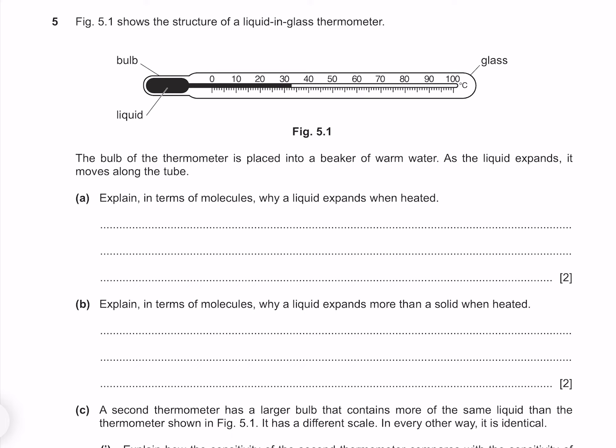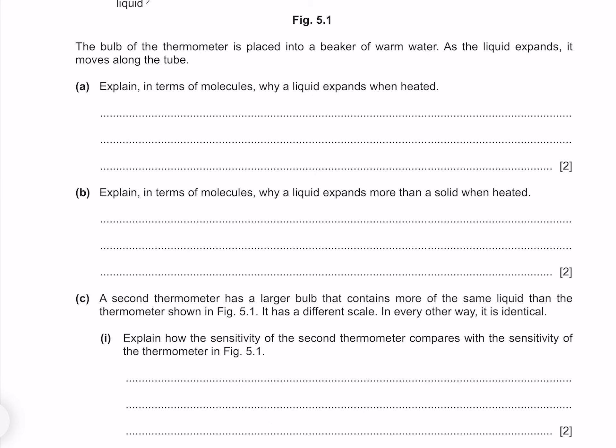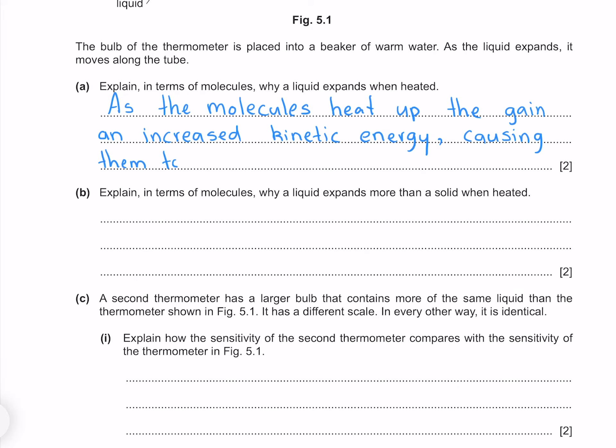Figure 5.1 shows the structure of a liquid-in-glass thermometer. The bulb is placed into a beaker of warm water and as the liquid expands it moves along the tube. Explain in terms of molecules why a liquid expands when heated. As the molecules heat up they gain increased kinetic energy, causing them to collide with each other more often and more energetically.